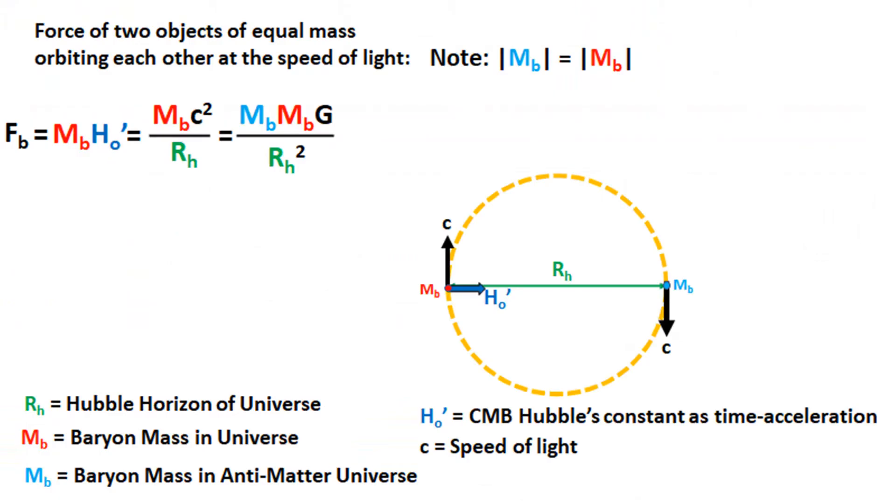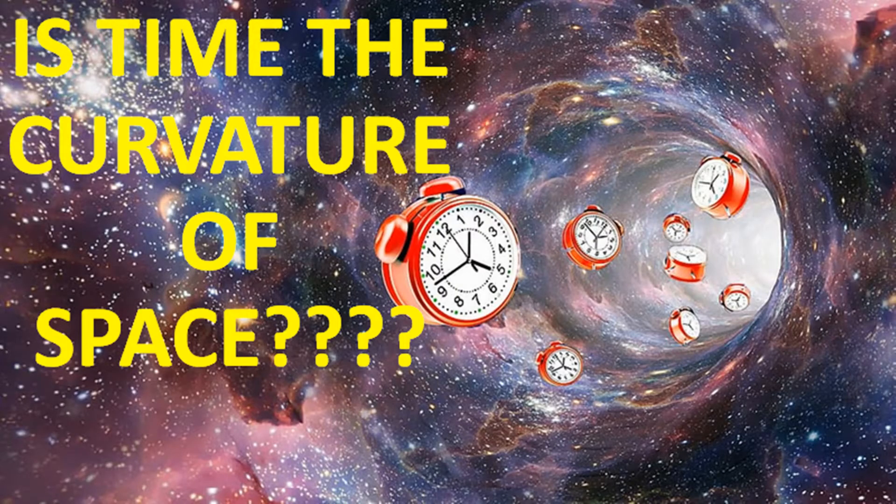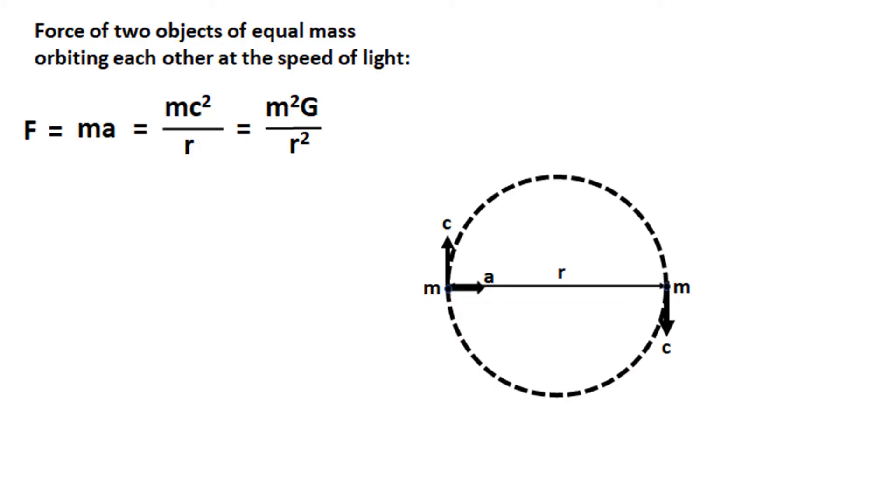Let's start with our space-time orbit, this orbit being responsible for the generation of baryon matter in our universe, discussed in episode 1 about gravity and time. Consider that the equations here are simply the force equations for an orbit where the masses are equal and the orbital velocity is the speed of light.